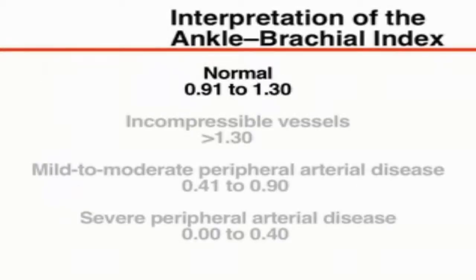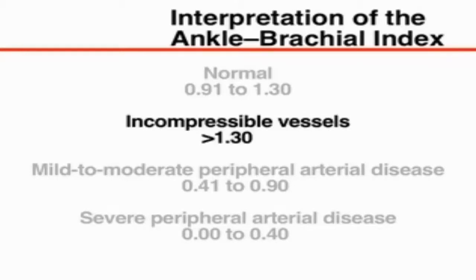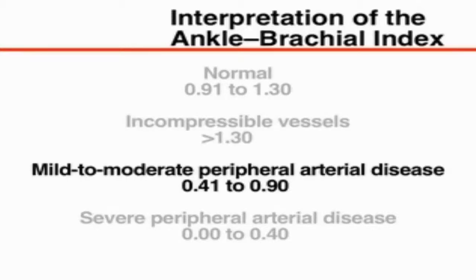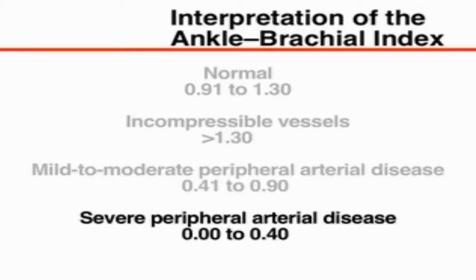A normal ankle brachial index at rest ranges from 0.91 to 1.3. Above 1.3, you should suspect that the patient has incompressible vessels. Decreases in the ankle brachial index are consistent with peripheral arterial disease. Mild to moderate peripheral arterial disease usually produces an ankle brachial index in the range of 0.41 to 0.9. Below 0.4, severe peripheral arterial disease is usually present.